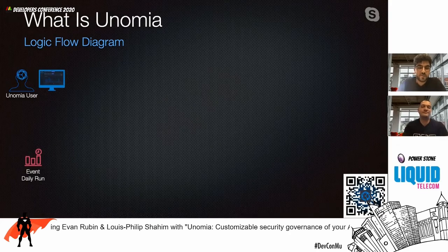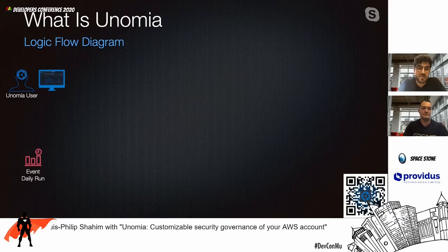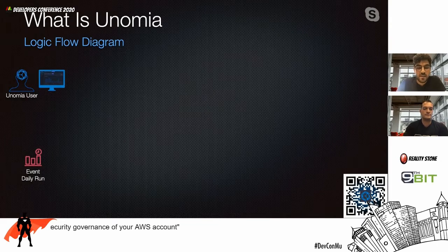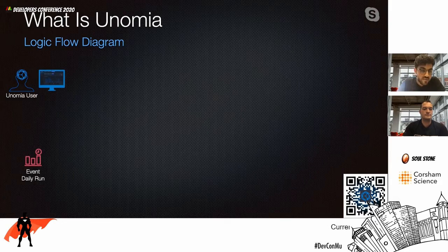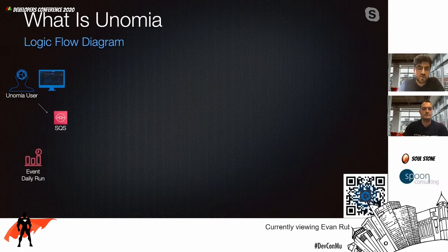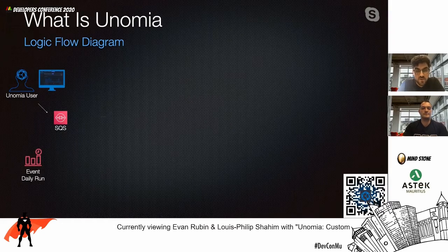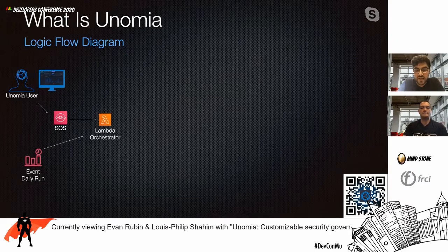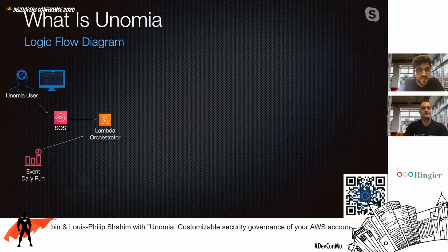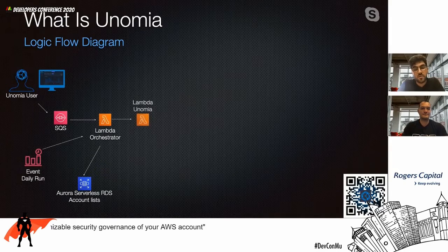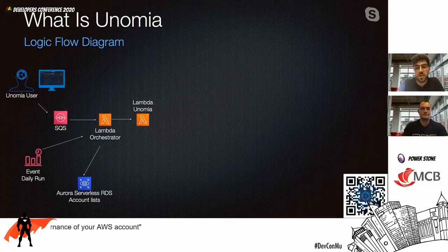Let's talk about the actual flow of Unomia and how the technologies are all linked up. There are two ways of triggering a scan in your accounts for vulnerabilities: you can manually run the scan from the website, or alternatively we have a daily cron job running at 8am GMT+2. These triggered events are sent to a queue, which then triggers an orchestration lambda that handles all of our fanouts and is the start of our logic. This lambda fetches the required account data from our Aurora Serverless RDS database and fans out to run all the Unomia logic, ensuring tasks run in parallel and do not time out.